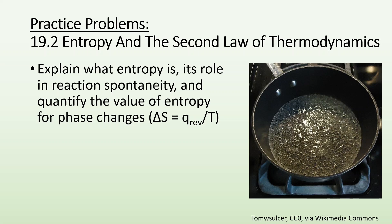So objectives being explain what entropy is, its role in reaction spontaneity, and quantify the value of entropy for phase changes. So we have this equation delta S equals Q rev divided by T, where the delta S is the change in entropy, the Q reverse is the heat exchange for a reversible process, and the T is the temperature in Kelvin at which that process is occurring, which is why I got a picture of a pot of boiling water. This is at the boiling point, so the temperature is going to remain constant. We're talking about going from a liquid to a gas and the change in entropy associated with that.